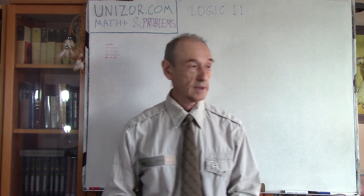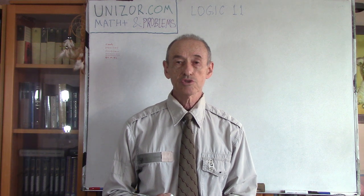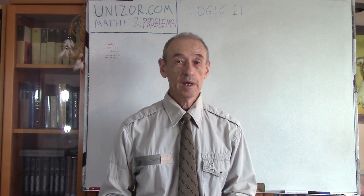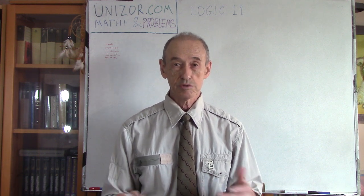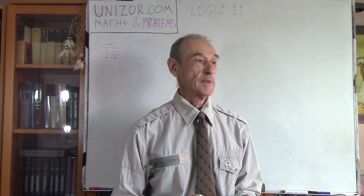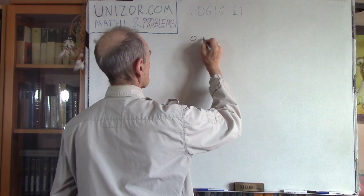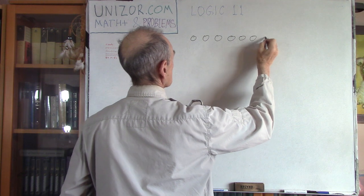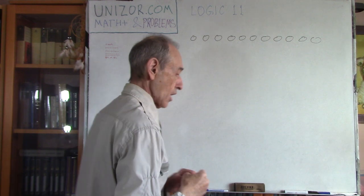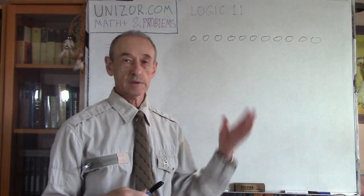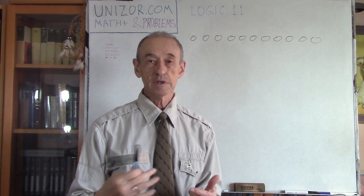Okay, back to the problem. Consider we have a situation of epidemic and during this time people are trying not to get close to each other just in case. Here is the problem: you have a row of 11 seats — one, two, three, four, five, six, seven, eight, nine, ten, eleven seats. So how many people can accommodate this row of seats if they don't want to sit near each other?